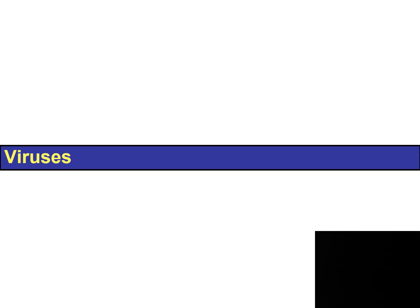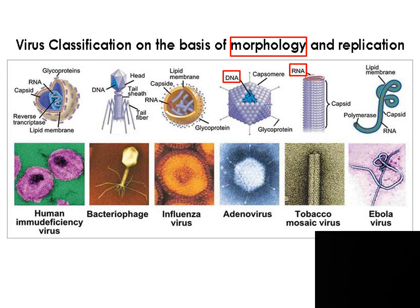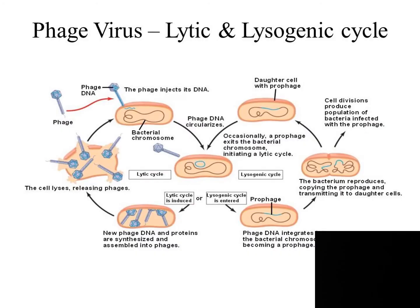To understand viruses, you have to understand that there are two major categories based on the type of nucleic acids they have. You have DNA viruses and you have RNA viruses. These viruses are able to replicate and survive in two separate pathways, the lytic pathway versus the lysogenic pathway. We'll discuss this later.